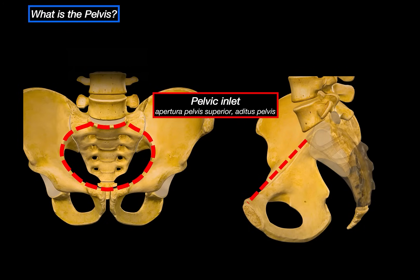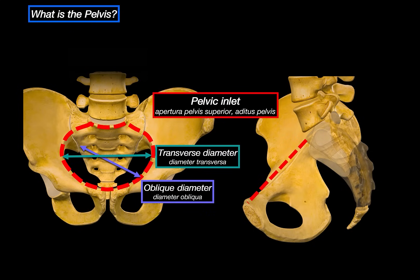First is the transverse diameter — the widest horizontal span of the pelvic inlet, going from one side of the pelvic brim to the other, usually about 13cm in an average female pelvis. Next is the oblique diameter, which runs diagonally from the sacroiliac joint on one side to the iliopectineal eminence on the opposite side, roughly 13.5cm. And then there's the anatomical conjugate — the straight line from the sacral promontory to the upper border of the pubic symphysis, reflecting the anteroposterior diameter of the pelvic inlet, typically 11–12cm. Clinically, we often estimate the obstetric conjugate instead, since the anatomical conjugate can't be measured directly during pelvic exams.